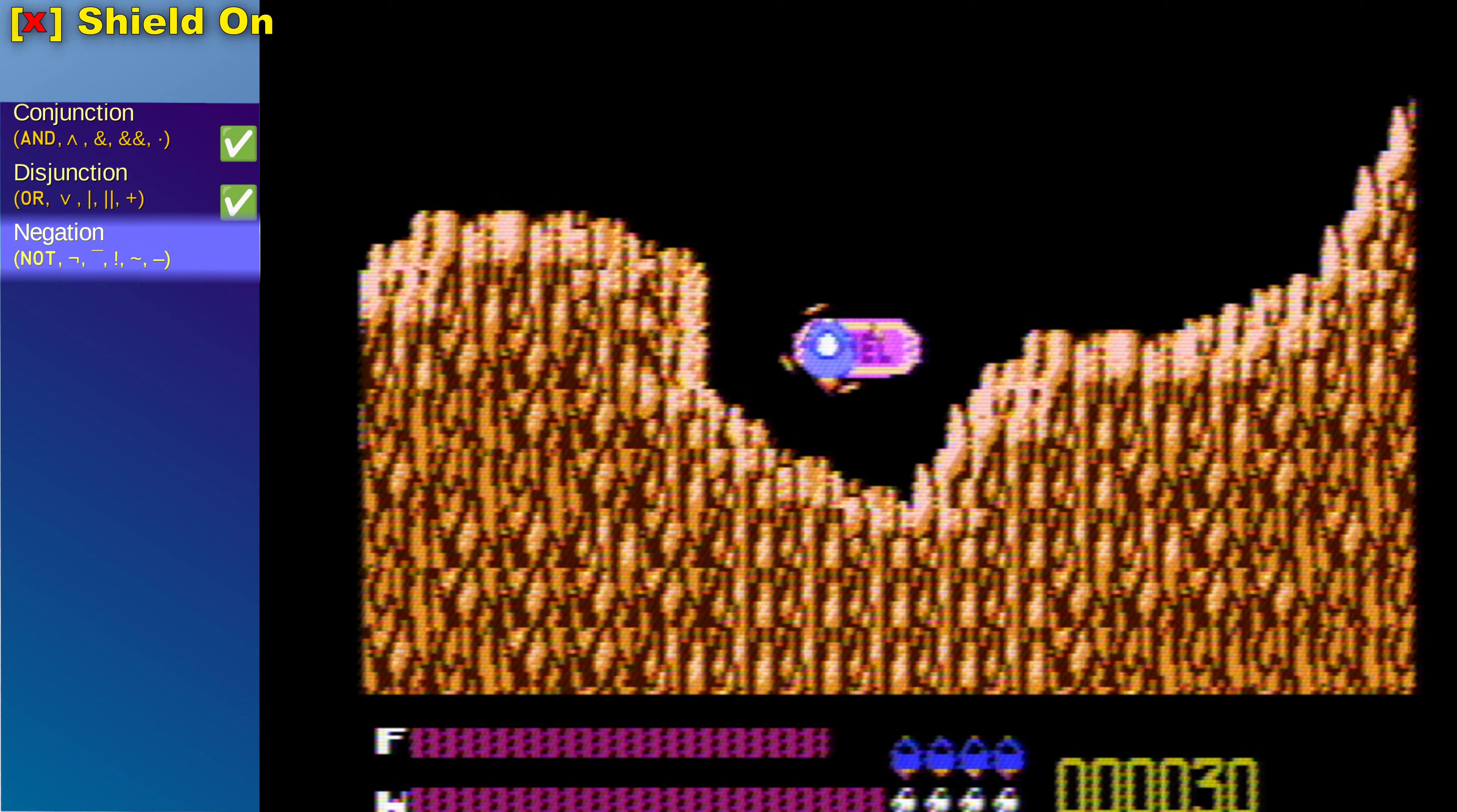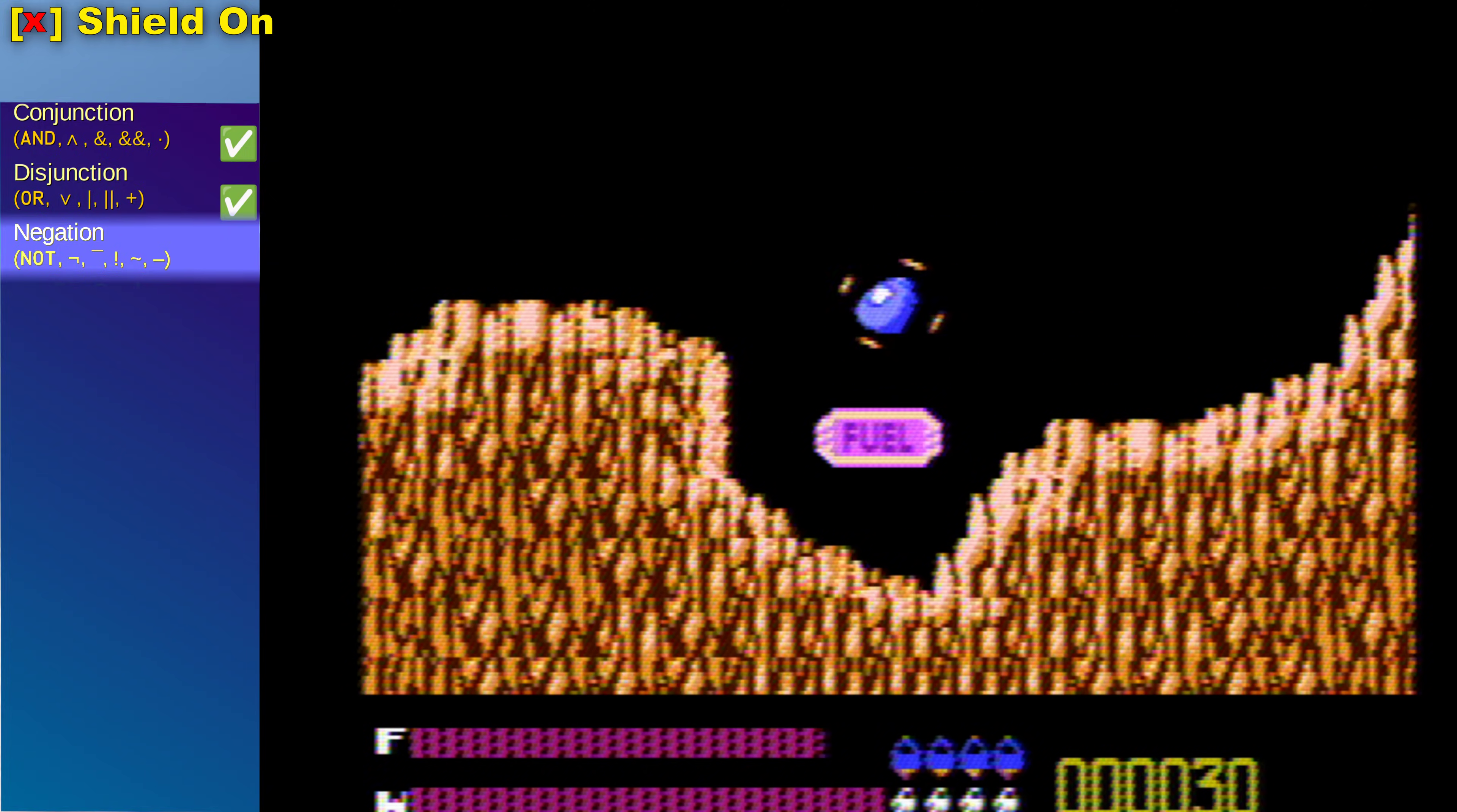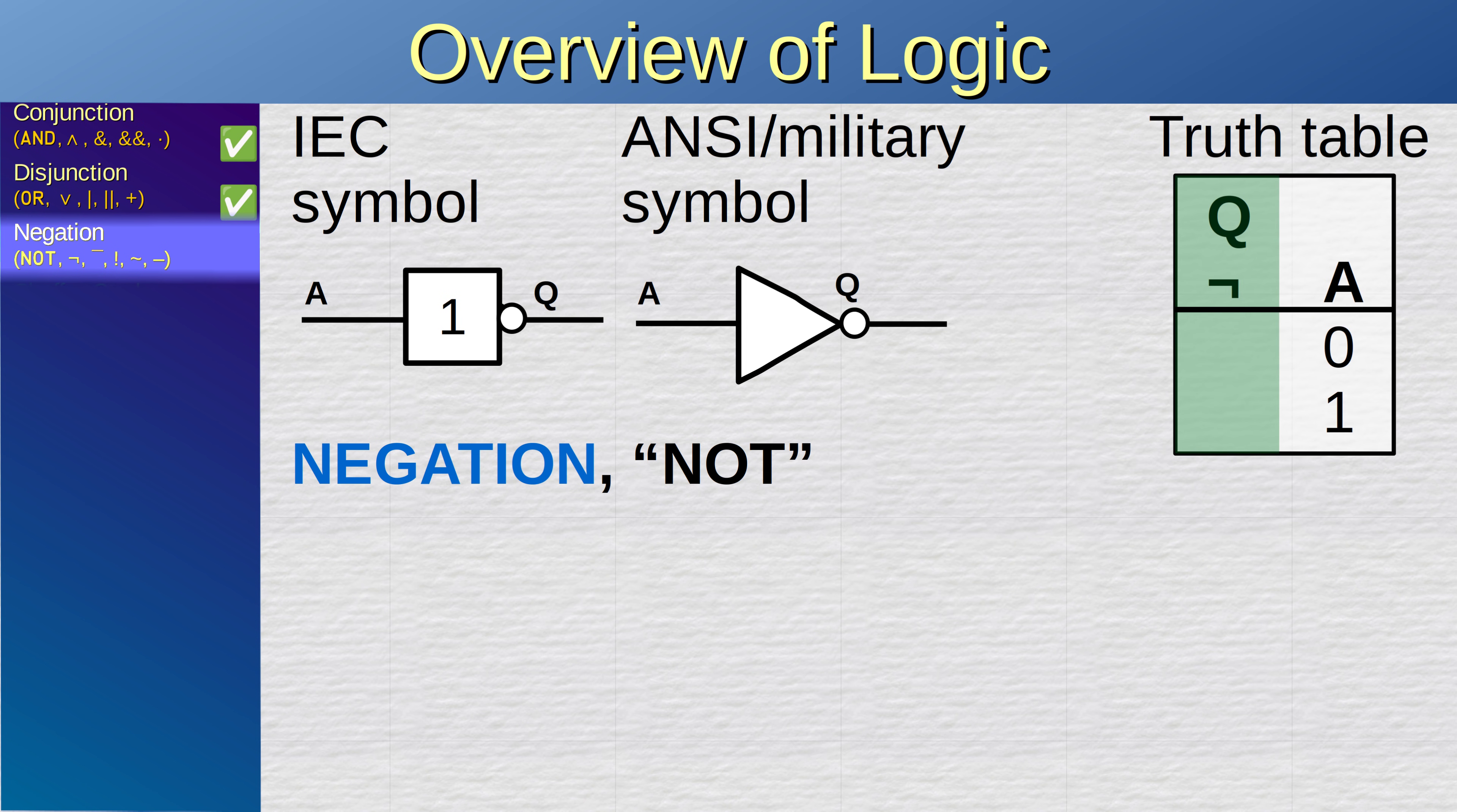In Solar Jetman, if you have the shield activated, then you cannot tow items. If you don't have the shield activated, then you can tow items. In digital electronics we represent this sort of operation called negation, using one of these two symbols. It has a very simple truth table. Simply, power goes out if no power comes in. If power goes in, then no power comes out.